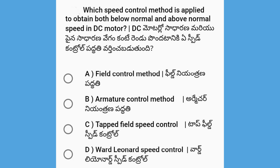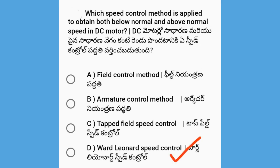Next, which Speed Control Method is applied to obtain both Below Normal and Above Normal speed in a DC Motor? The options are Field Control Method, Armature Control Method, Tapped Field Speed Control Method, and Ward Leonard Speed Control Method. The answer is Ward Leonard Speed Control Method.